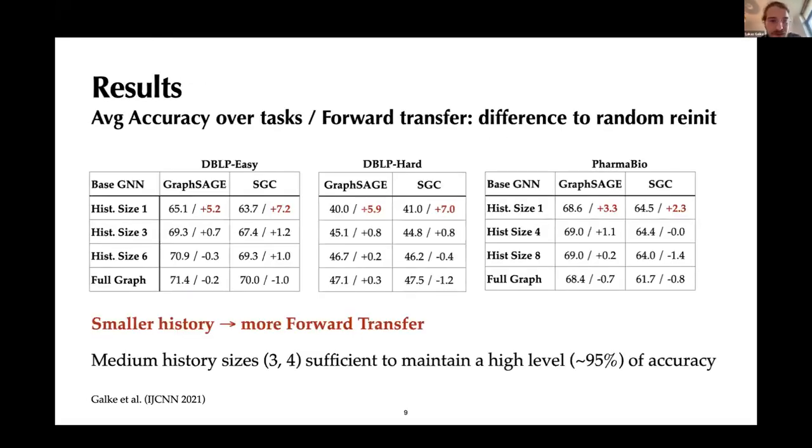So let's see how it turns out on the three datasets. And what we find consistently is that we only get a gain from using the past model or the previous model when the history size is small. So there's at least a relationship, the smaller the history size, the more use we get out of reusing the model. So there's a kind of trade-off between implicit knowledge in the model parameters and explicit knowledge, which also determines how much memory we want to allocate for this streaming scenario. But another interesting finding was that medium history sizes of just three or four years are sufficient to maintain a high level of accuracy that would be around 95 percent relative compared to retraining on the full graph.